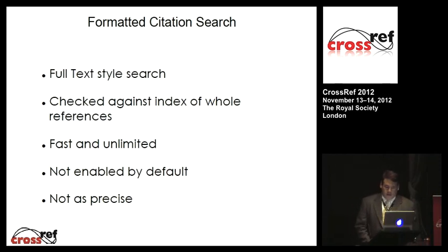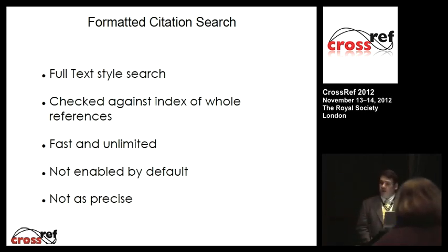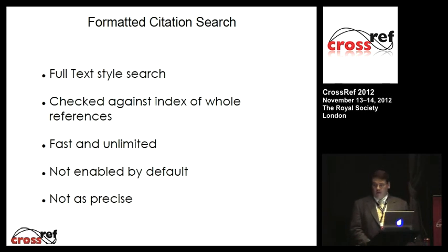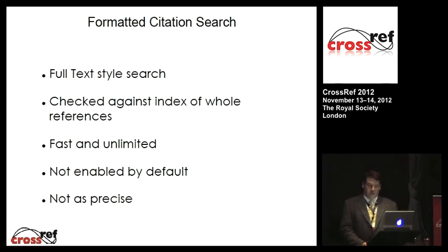The formatted citation search, as explained earlier, is a difference between querying and searching — this is a search tool. It does a full-text search against an index of references. It's very fast and unlimited, but it is not enabled by default because it's not as precise. It's more of a fuzzy match style search. Our default philosophy is if you query for something, you get one and only one result. This doesn't follow that rule, so a decision has to be made before we implement it for anyone's account.